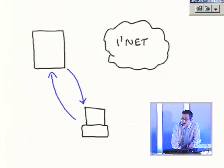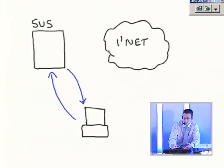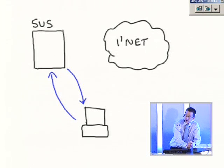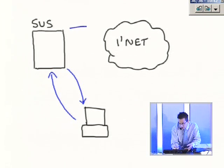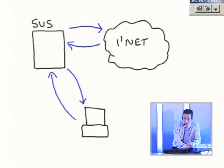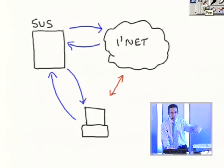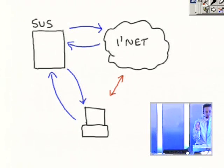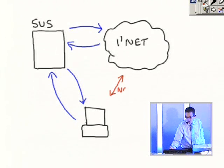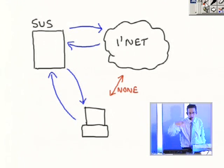And this server is known as a SUS server — Software Update Services. So how does the SUS server get its updates? It goes to the internet and gets them. As a result of this, there is no interaction whatsoever happening between the internet and your users for this particular component. There is no access for Windows Update to go out to the internet directly from clients.